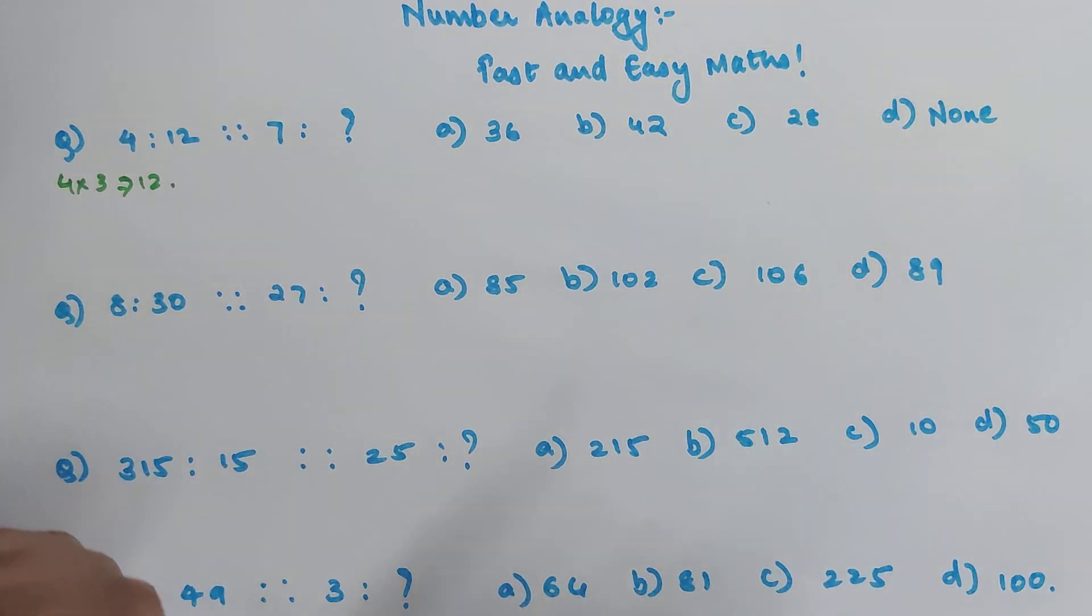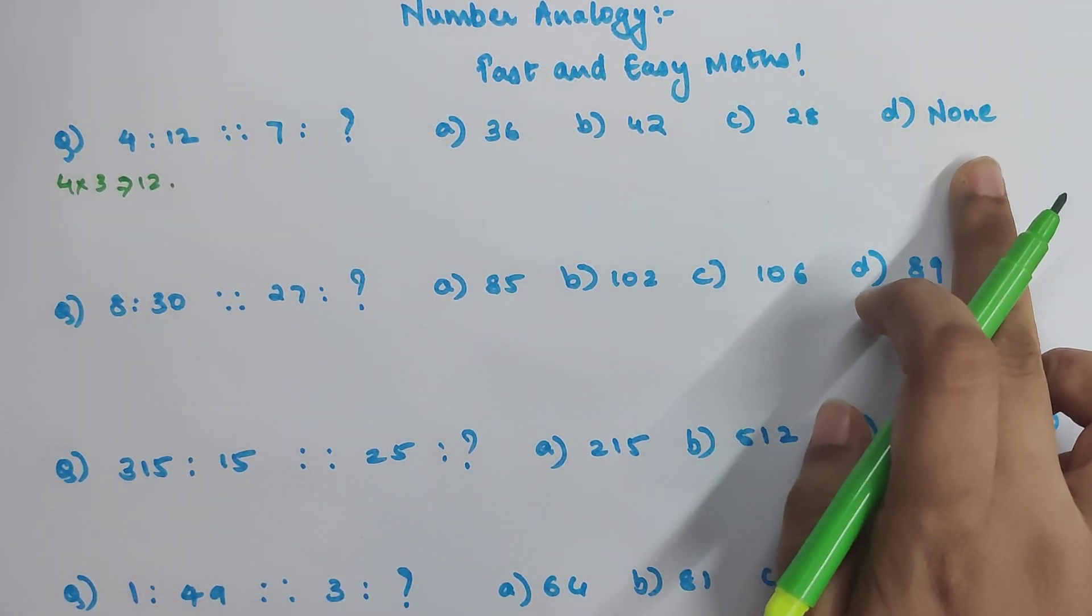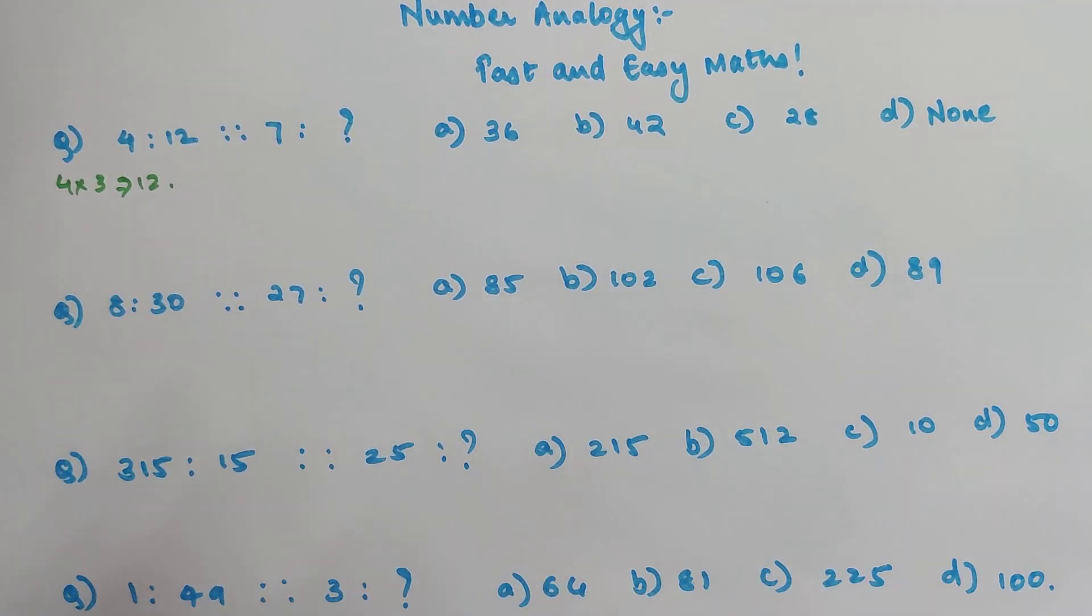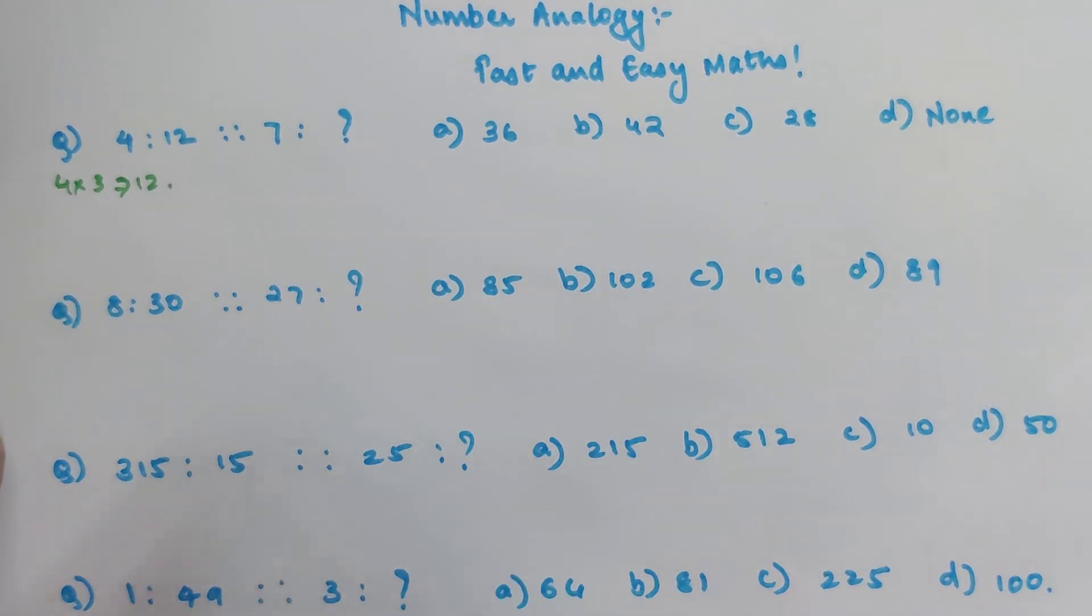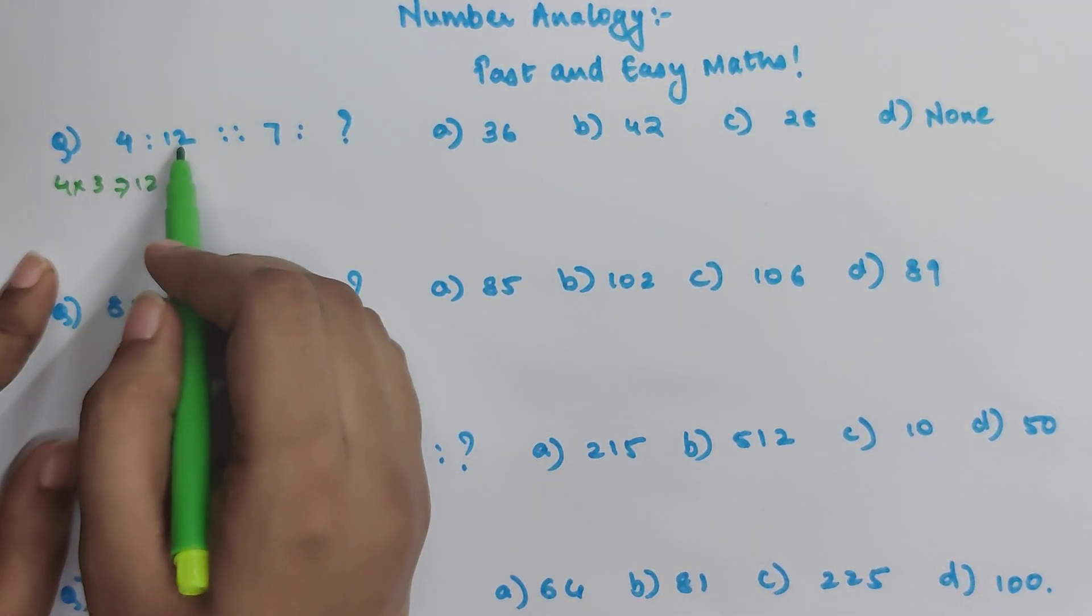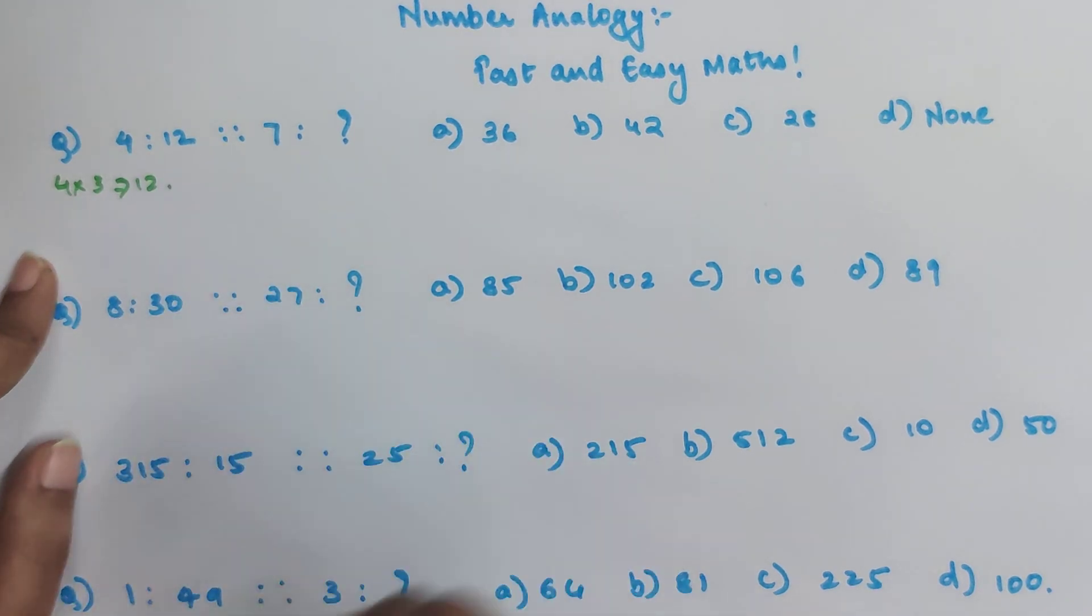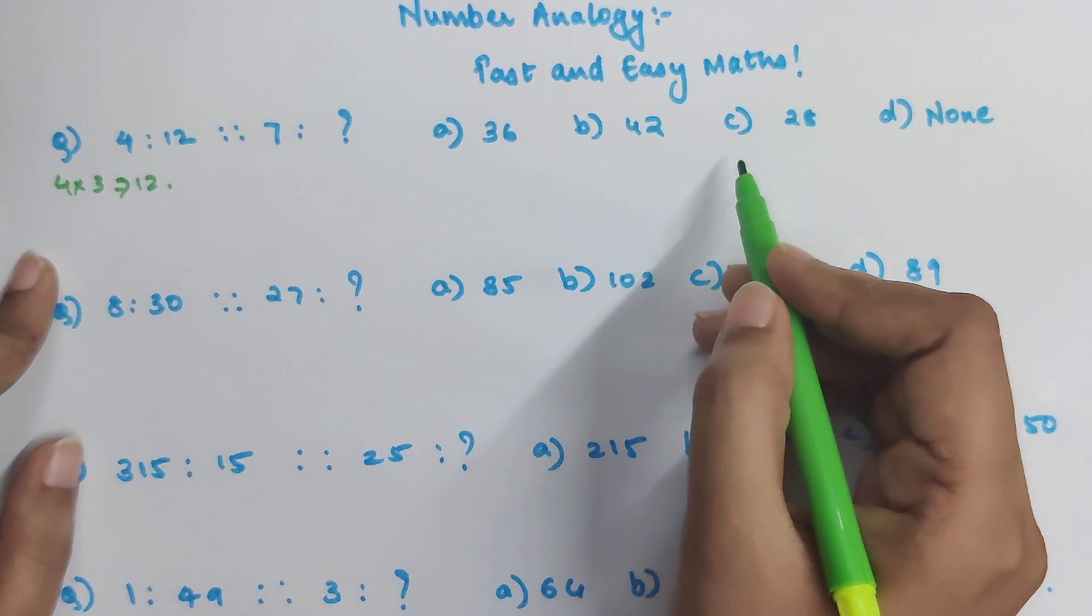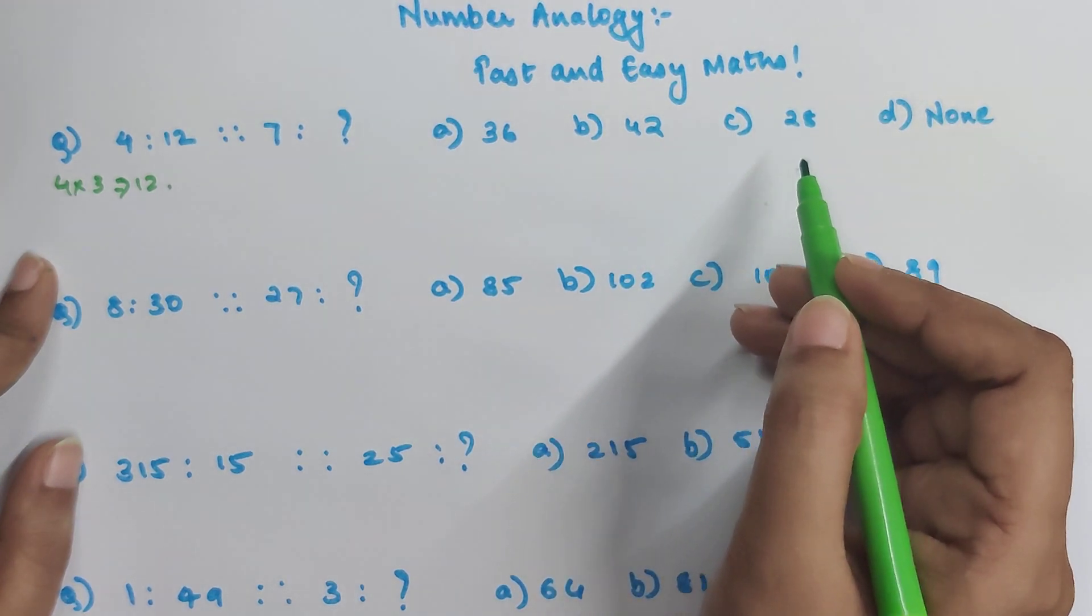So 7 into 3 should get you 21 but your answer over here or other options do not have 21. Now the tricky part is here you already have a none option. So lot of students would have marked none and moved on. But here just for a second I want all of you to pause and see if you can get this 4 is to 12. There is some logic to this and see if that logic works over here and that option is available in your answer.